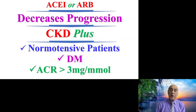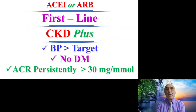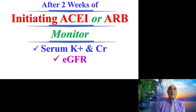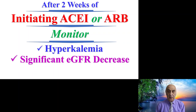The ACE inhibitor or angiotensin receptor blocker is also first-line for a patient with CKD when the blood pressure is above target, there is no diabetes mellitus, but the ACR is persistently above 30 mg per mmol. After two weeks of initiating ACEi or ARB therapy, it's important to monitor the serum level of potassium and creatinine, the glomerular filtration rate, and to watch for hyperkalemia or any significant decrease in GFR.